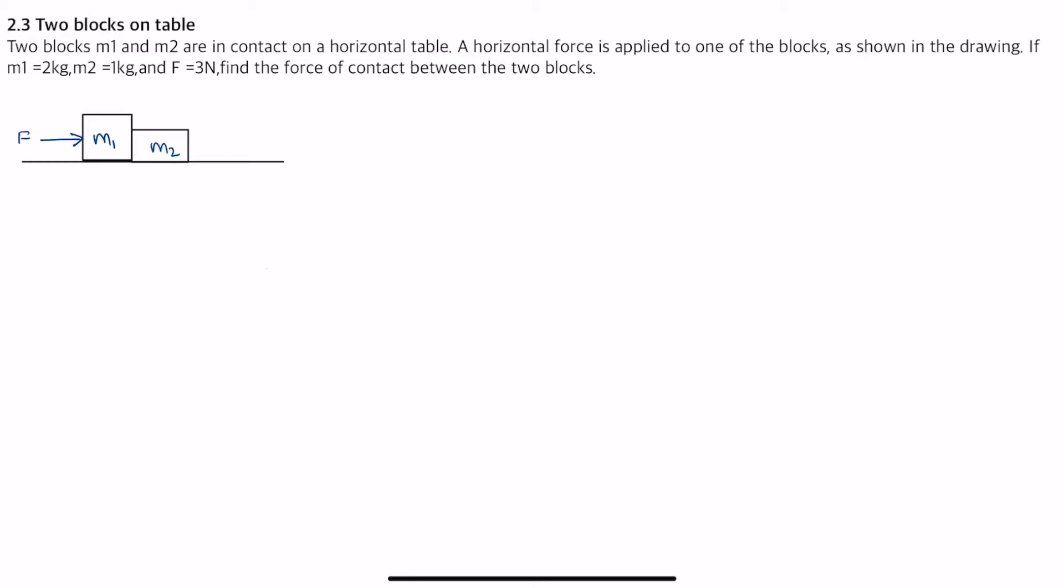What will be the common acceleration? I can just write an expression which is F equals to m1 plus m2 times a. And A will be equal to F divided by m1 plus m2. Here my F is 3 newtons and m1 plus m2 will be 3, so I can just write it as 1 meter per second squared.